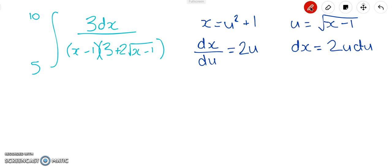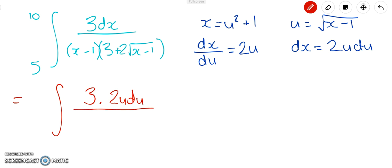We now have a new integral with all the x's replaced by u's — I'll leave the limits and come back to them. On the top we still have 3, and dx has become 2u du. For x − 1, since x = u² + 1, rewriting gives (u² + 1 − 1) in the first bracket. In the second bracket we have 3 + 2√(x − 1), and √(x − 1) is just u, so we replace that with u.